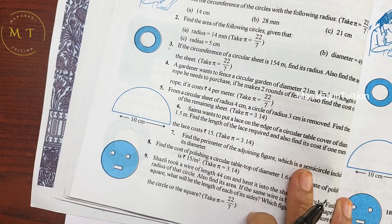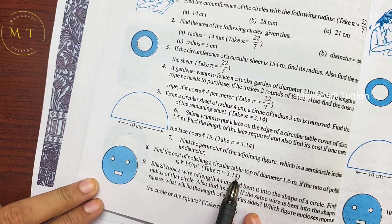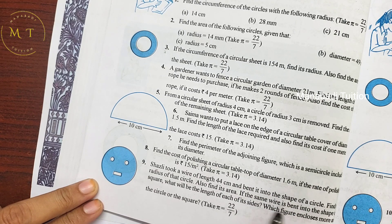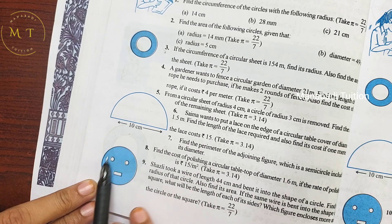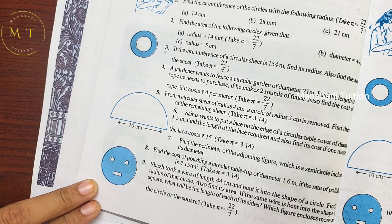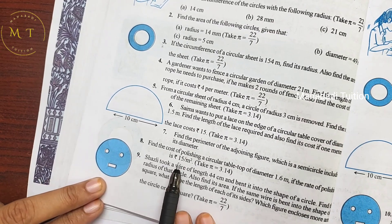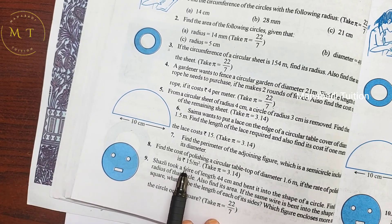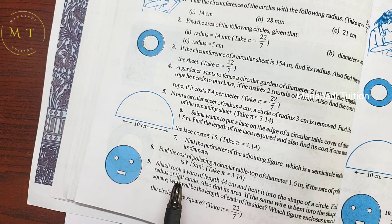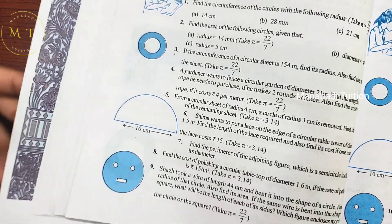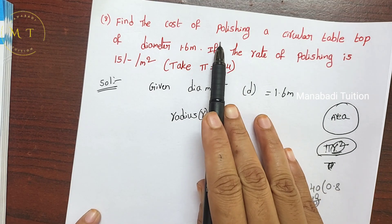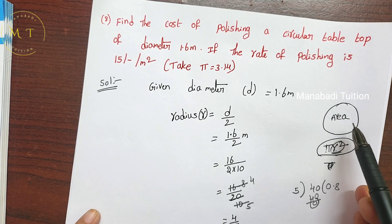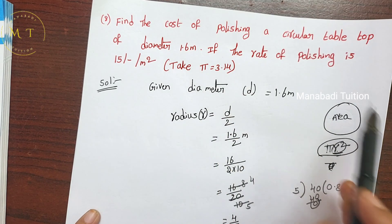Next, question number 8: find the cost of polishing a circular table top of diameter 1.6 meters. This is a circular shape, so we need to find the area of the inside. The rate of polishing is 15 rupees per square meter. We need to find the total cost of polishing that table.